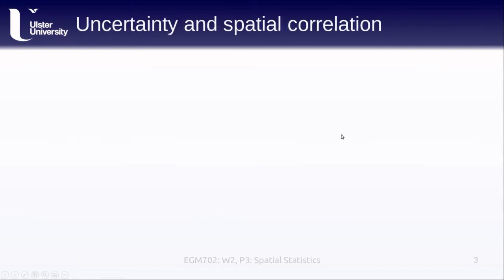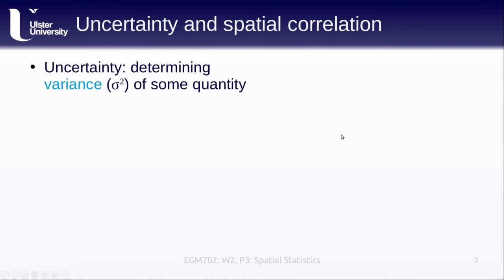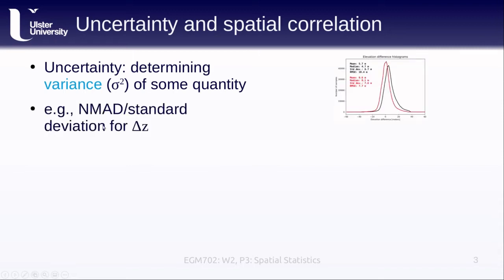If we think about uncertainty, this is just determining the variance — how much a particular quantity varies in space or time. For example, we looked at the normalized median absolute deviation (NMAD) or standard deviation for our elevation differences. This shows how much the value varies around a mean value that, for elevation difference, we normally expect to be zero.